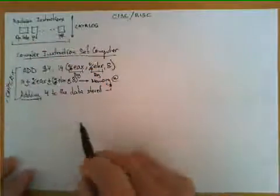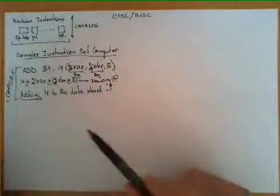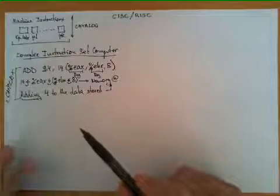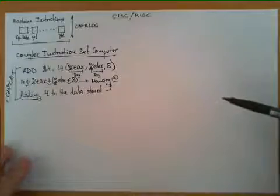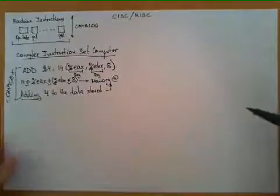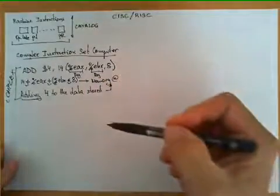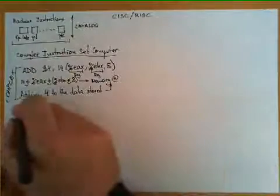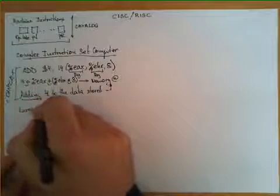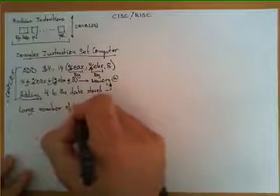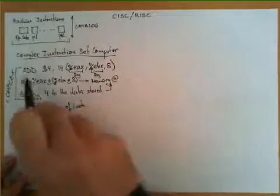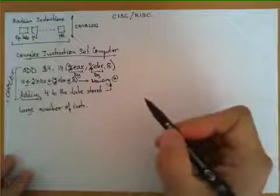Although there is no written rule about what it constitutes as a complex or a simple machine instruction, the guideline here is that, as you can see, there are several arithmetic operations that are involved in its execution. So typically, the microprocessors that have a CISC architecture, they provide a large number, or a very rich catalog, of instructions. And some of them can do sophisticated operations like this one.